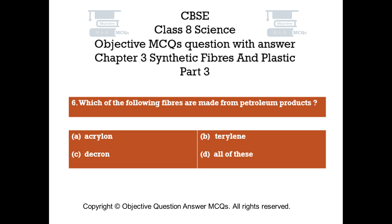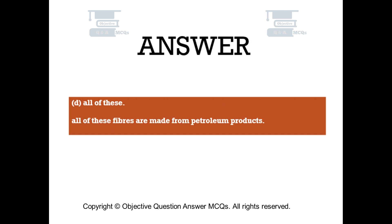Question number six. Which of the following fibers are made from petroleum products? Option A: acrylon. Option B: terrylene. Option C: decron. Option D: all of these. The right answer is option D — all of these fibers are made from petroleum products.